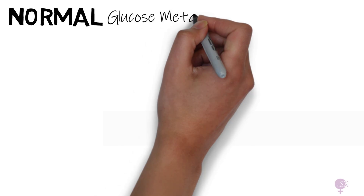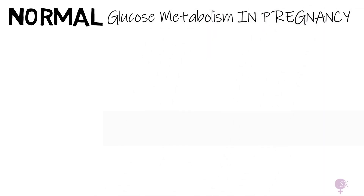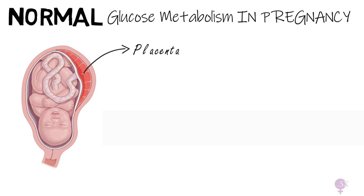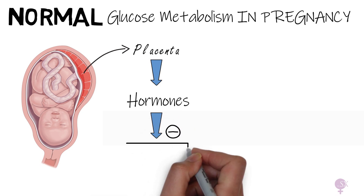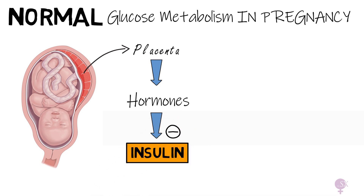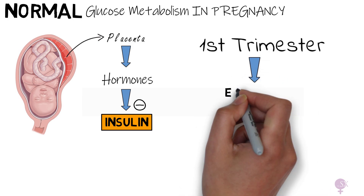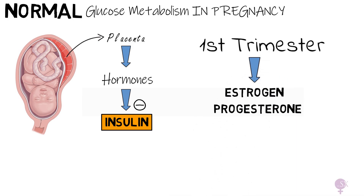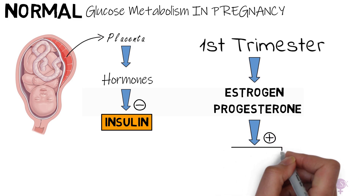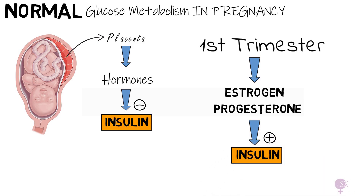Now let's have a look at what happens during a normal pregnancy. During pregnancy we've got the placenta connecting the mother and fetus. The placenta produces a number of hormones which help to maintain the pregnancy, and these impair the action of insulin making it less effective. During the first trimester, we predominantly have estrogen and progesterone being produced. These actually promote insulin sensitivity, which results in increased maternal energy stores for later pregnancy and can actually result in a mild hypoglycemia.